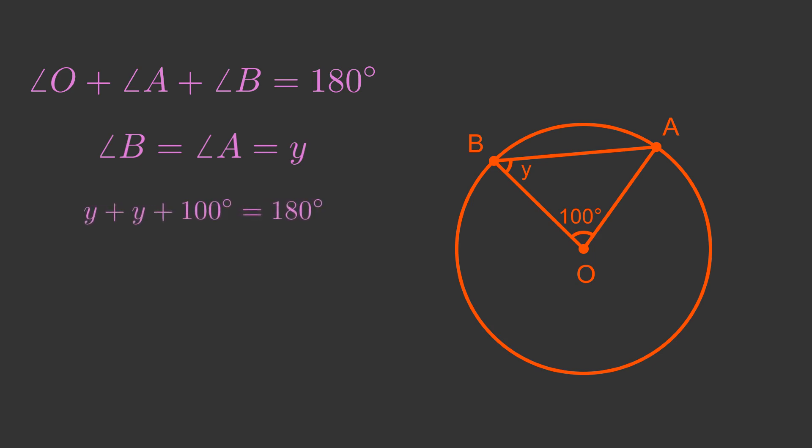Substituting these values gives Y plus Y plus 100 equals 180. Rearranging gives 2Y equals 80. So angle Y is 40 degrees.